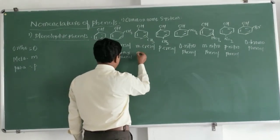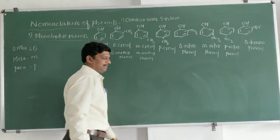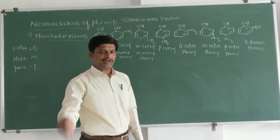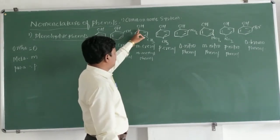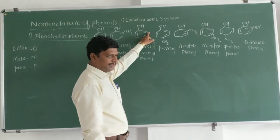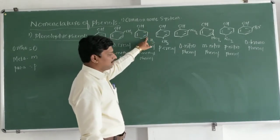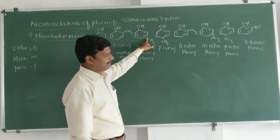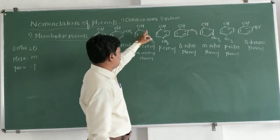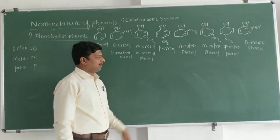The next structure is known as meta-methylphenol. Why meta? Because when two substituents on the benzene are in the alternate position — one after the other, with one position in between — then the meta prefix is used. Therefore it is known as meta-methylphenol.